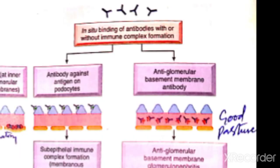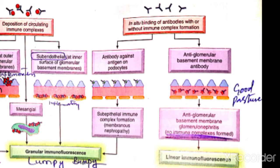In membranous nephropathy, you have to remember that this involves in-situ binding. Antibodies form immune complexes through in-situ immune complex formation. In this case, antigens and antibodies are attached — this is called membranous nephropathy. When we use immunofluorescence, the pattern is granular.